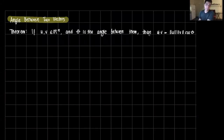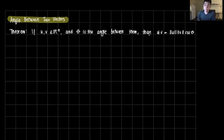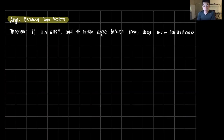Welcome to this video on a proof for the angle between two vectors. We have a theorem here that we're going to prove rigorously. If u and v are two vectors and theta is the angle between them, then the dot product of u and v, which is a number, is equal to the norm of u times the norm of v times cosine of theta.